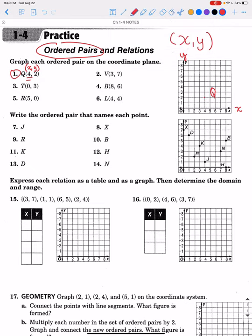Let's do example 2 in purple. Remember this is X and Y, so on the X axis we go over 3, and then the Y we go up 7. Here's the 3 and then we go up to the 7 on the Y — where they cross, that is the point V.